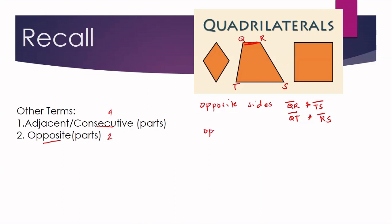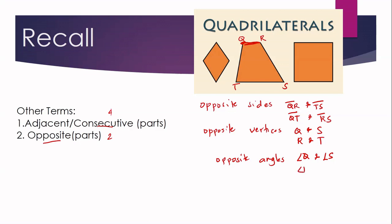If we ask for the opposite vertices: point Q and point S are opposite, and the other pair is point R and point T. We can also name the opposite angles: angle Q is opposite to angle S, and the other pair is angle R and angle T. Remember — if asked for consecutive or adjacent parts, there are four pairs; if asked for opposite or non-consecutive parts, there are only two pairs.